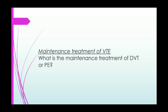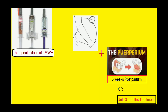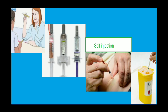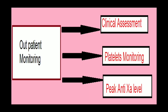For maintenance treatment of DVT or PE: therapeutic dose subcutaneous LMWH should be employed during the remainder of pregnancy, for at least six weeks postnatally, or until at least three months of treatment has been given in total. Women should be taught to self-inject LMWH, and arrangements should be made for safe needle and syringe disposal, as well as outpatient monitoring including clinical assessment and peak anti-Xa level monitoring.